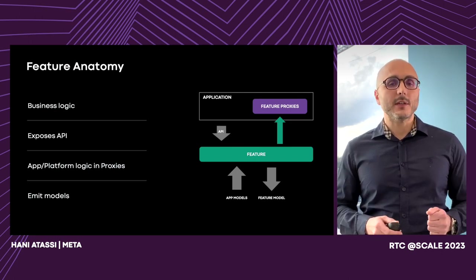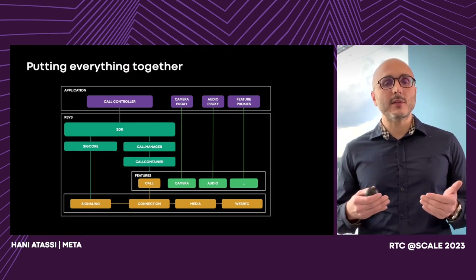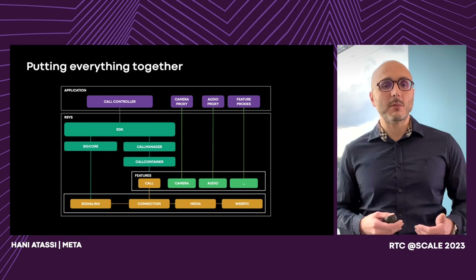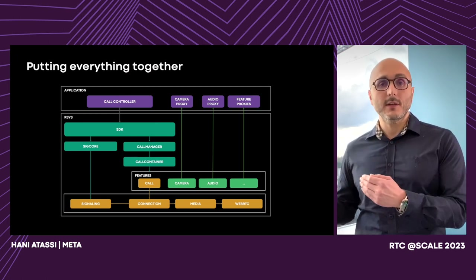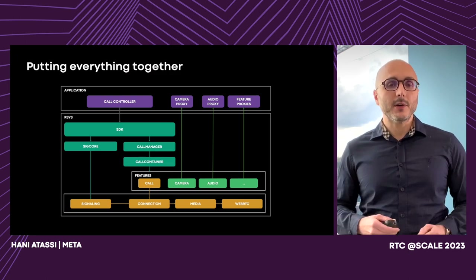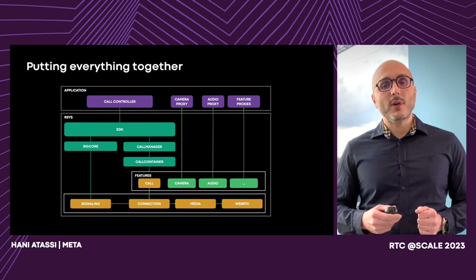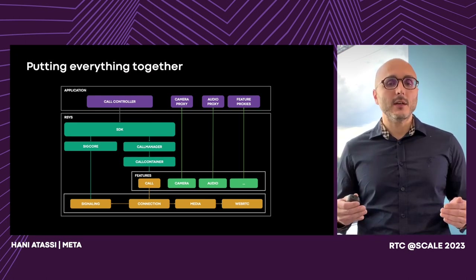Lastly, the feature emits models representing new states. Putting it all together, the main entry point into Arsys is the SDK, which provides platform-native interfaces — the projections we talked about in many languages. It also encapsulates the call manager along with signaling components. The signaling components, or what we refer to as SecCore, handle signaling that happens prior to starting the call. This helps us in isolating the signaling logic from the rest of the Arsys system and WebRTC libraries. It also allows us to defer loading the heavy components — WebRTC and other logic — from the signaling path. The call manager produces a call container per call, and the call container is a place that houses a state dispatcher and other features for the call. At the bottom, we have the connection, which orchestrates between media and signaling. And finally, media is what wraps WebRTC.